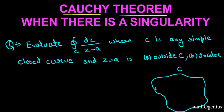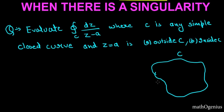First, let's take a curve C. Our question is we have to evaluate this integral where C is any simple closed curve and z equal to a is first outside C (that means there is no singularity inside C) and second time this is inside C, which is the trickier part. So let's get started. First, let's see this one in which the point a is outside our closed curve C.